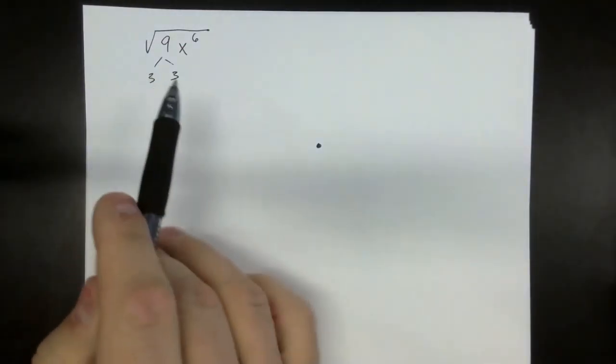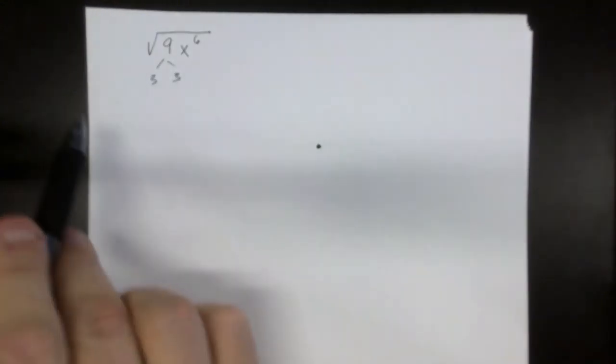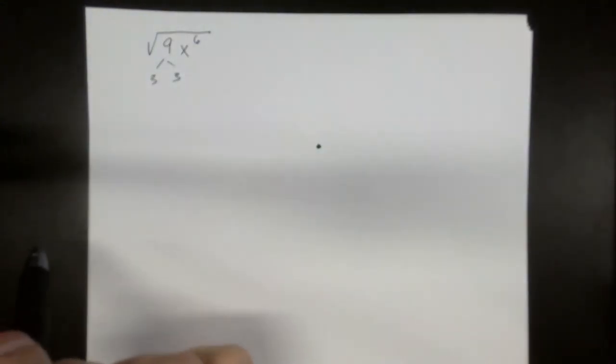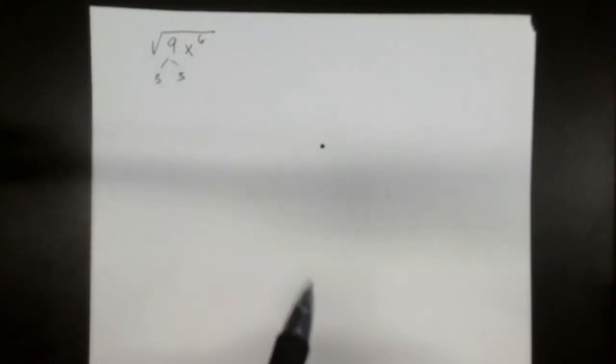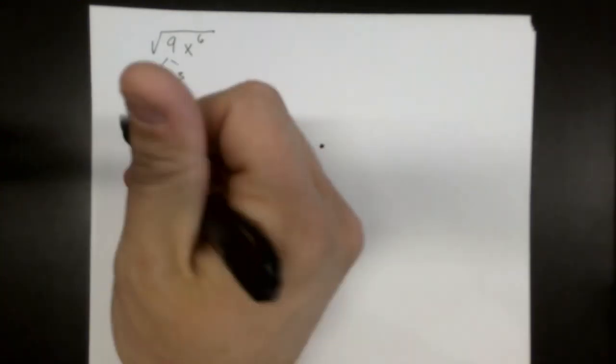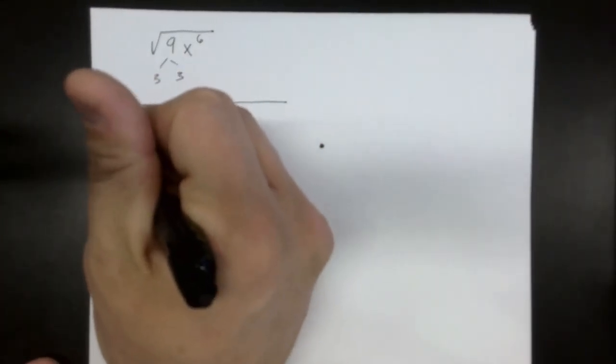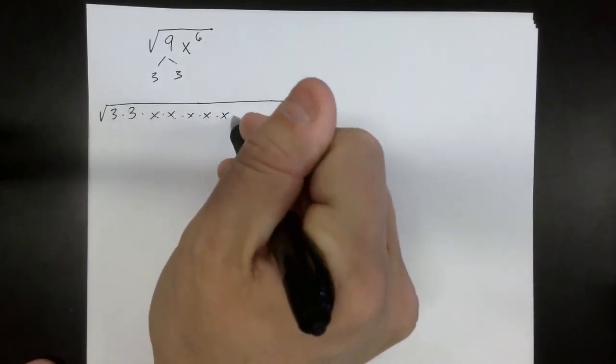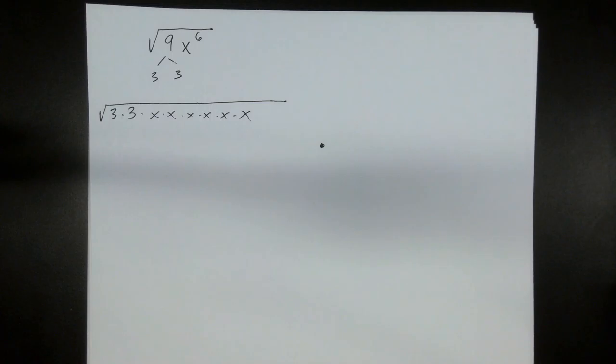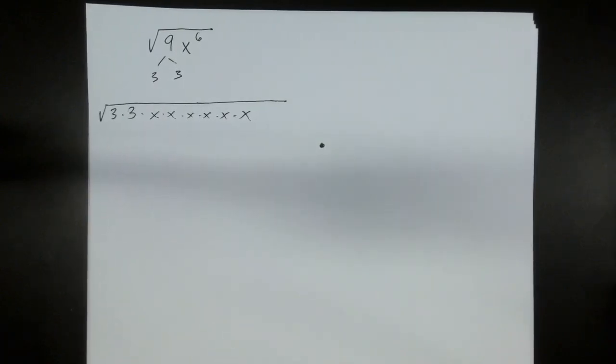We're going to ignore the variable first and just factor out the number. So what two numbers multiply together to be 9? 3 and 3, right? So we know that we're going to have basically no numbers left over underneath the square root. But this is the kicker, x to the 6th. The way we're going to write this inside of our square root is 3, 3, and then 6 x's, because if it's x to the 6th, that means there's 6 x's.